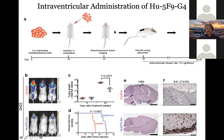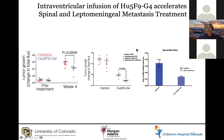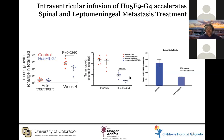We then explored intraventricular administration of 5F9-G4: instead of intraperitoneal injection, we put the antibody into osmotic pumps and directly infused it into the brain. We see very similar results — clearance of tumor, increased survival, and an influx of macrophages at the tumor site. We also asked whether intraventricular infusion offered an additive effect versus systemic treatment, and sure enough we saw an accelerated effect in clearing spinal tumors compared to systemic treatment.